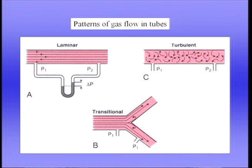To introduce this we first need to look at airflow through tubes, as shown in this image. If gas is flowing at a relatively slow rate, we have what's called laminar flow. In laminar flow, all the particles of the gas are moving parallel to the sides of the tube — a very well-behaved system. The pressure at the upstream end must be greater than at the downstream end, otherwise there's no flow.